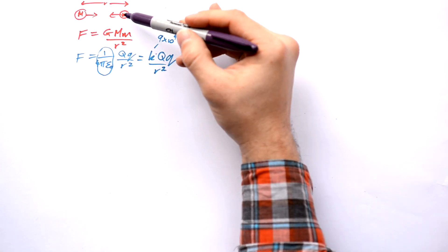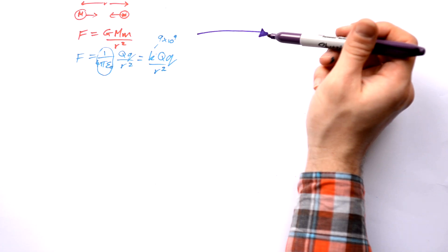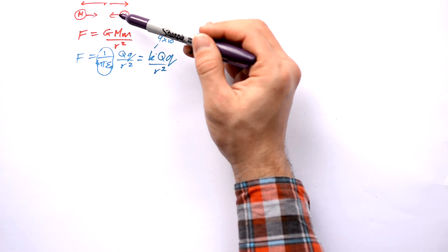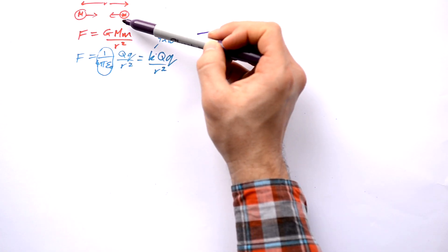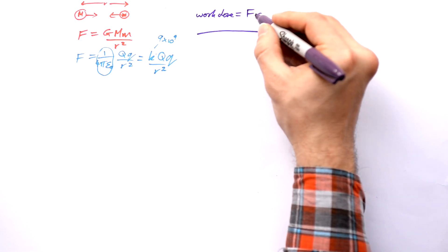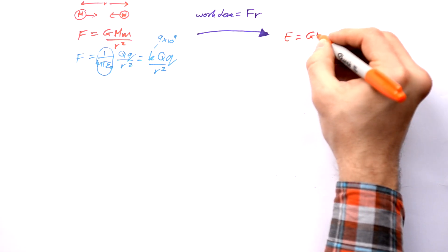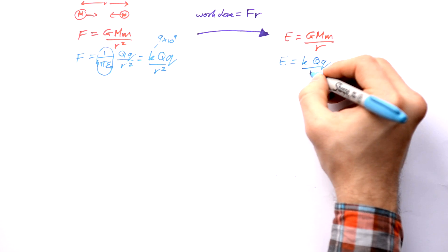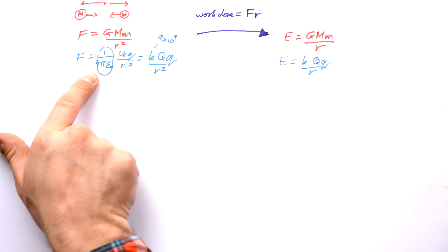What about potential energy? How much potential energy is there between these two masses? How do we get from force to energy? You should remember that energy or work done equals force times distance moved. Imagine these two masses had their centres touching, and we put in work to separate them to distance r. That's going to be F times r, so we multiply both equations by r. Potential energy for gravitational fields is G M M over r. Similarly for electric fields it's K Q Q over r. Don't forget that gravitational force can only be attractive, but for electric fields it can be attractive or repulsive.